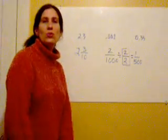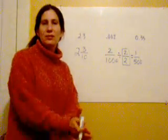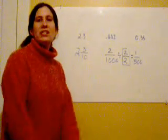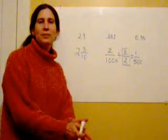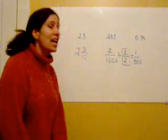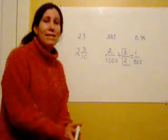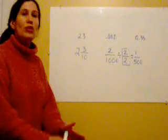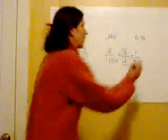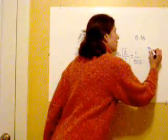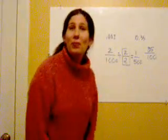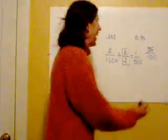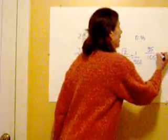Decimals to fractions, decimals to fractions, say it, write it, simplify it. So say it, thirty-five hundredths, oopsie, write it, and simplify it.